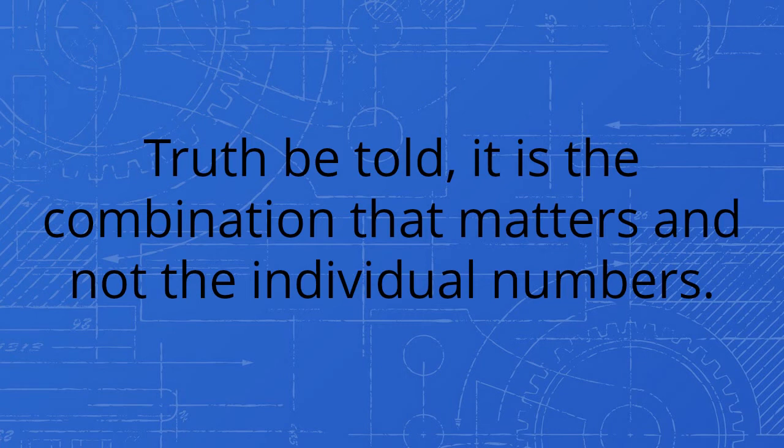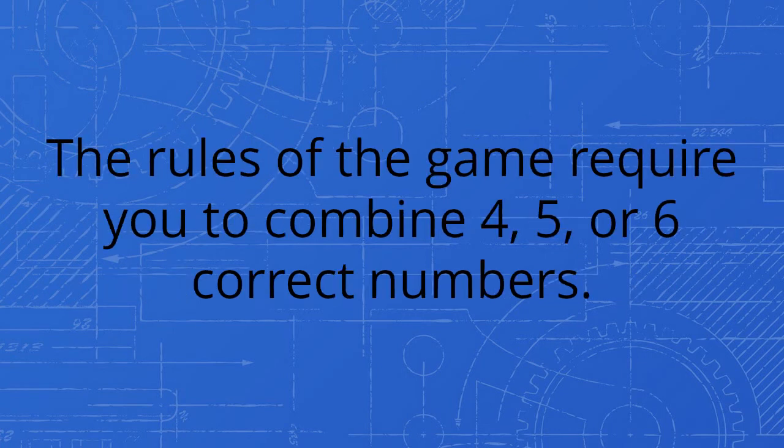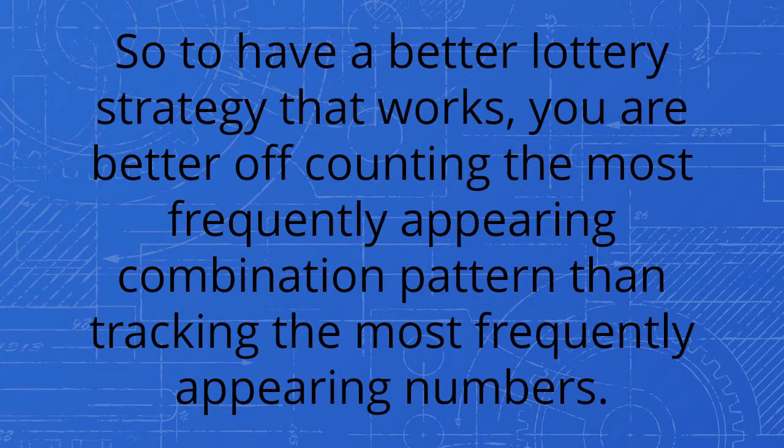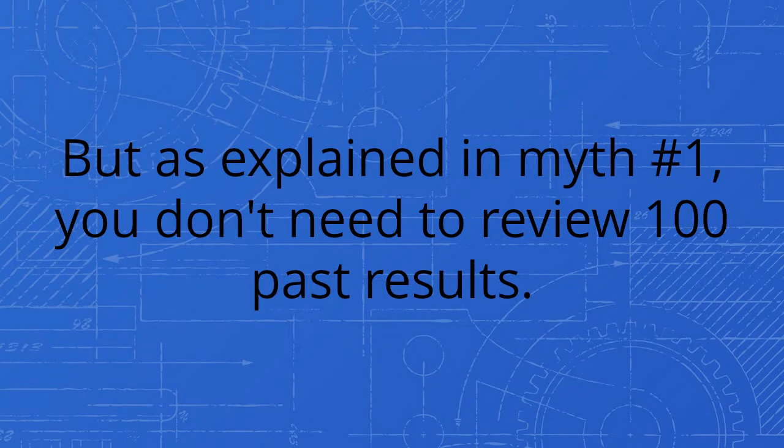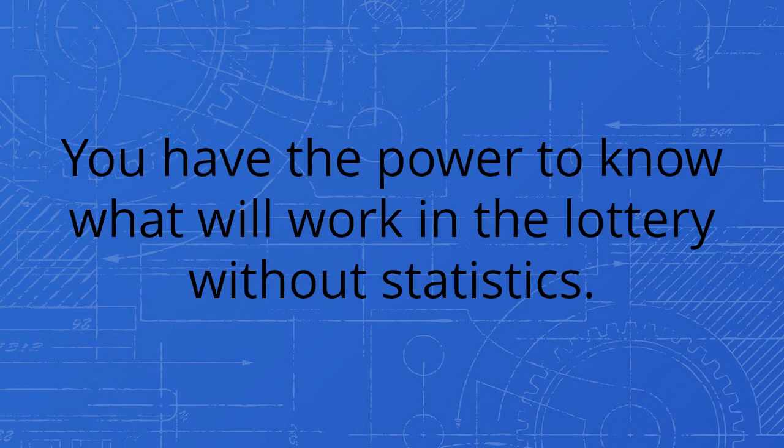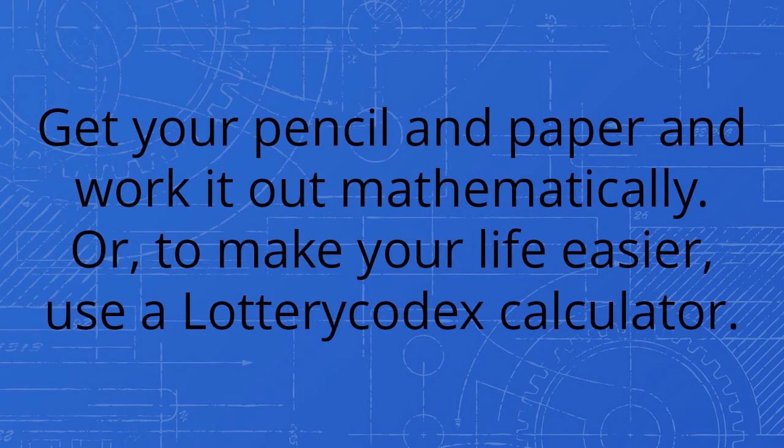Truth be told, it is the combination that matters and not the individual numbers. The rules of the game require you to combine four, five, or six correct numbers. So to have a better lottery strategy that works, you are better off counting the most frequently appearing combination pattern than tracking the most frequently appearing numbers. But as explained in myth number one, you don't need to review 100 past results. You have the power to know what will work in the lottery without statistics. Get your pencil and paper and work it out mathematically, or to make your life easier, use a lottery codex calculator.